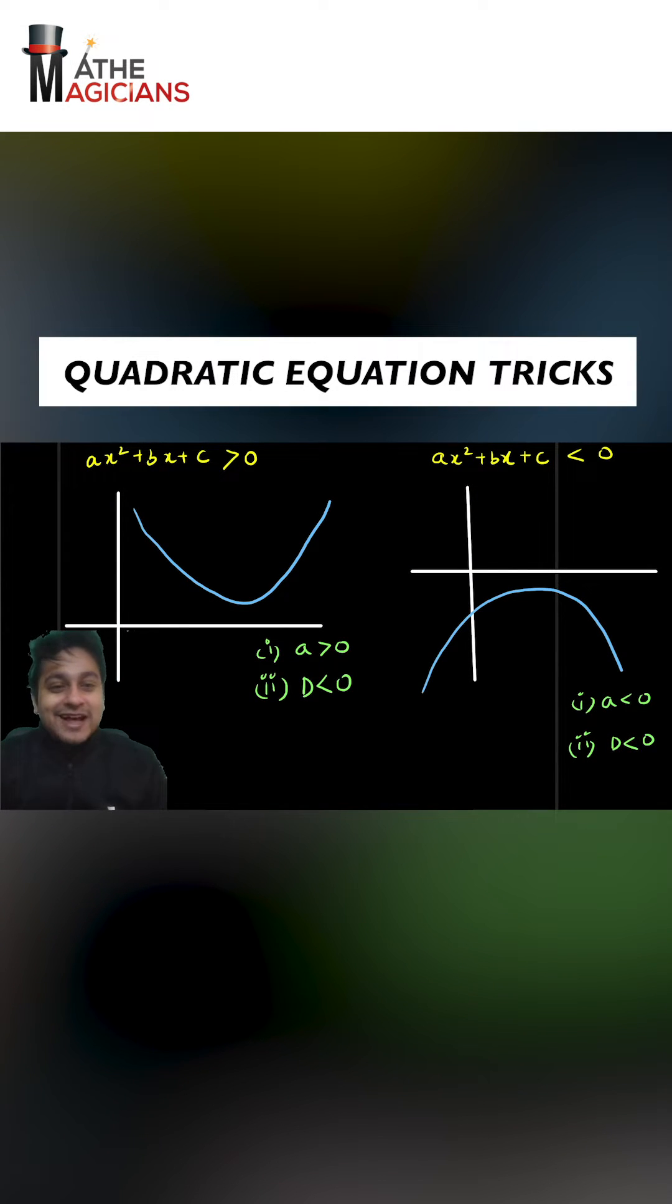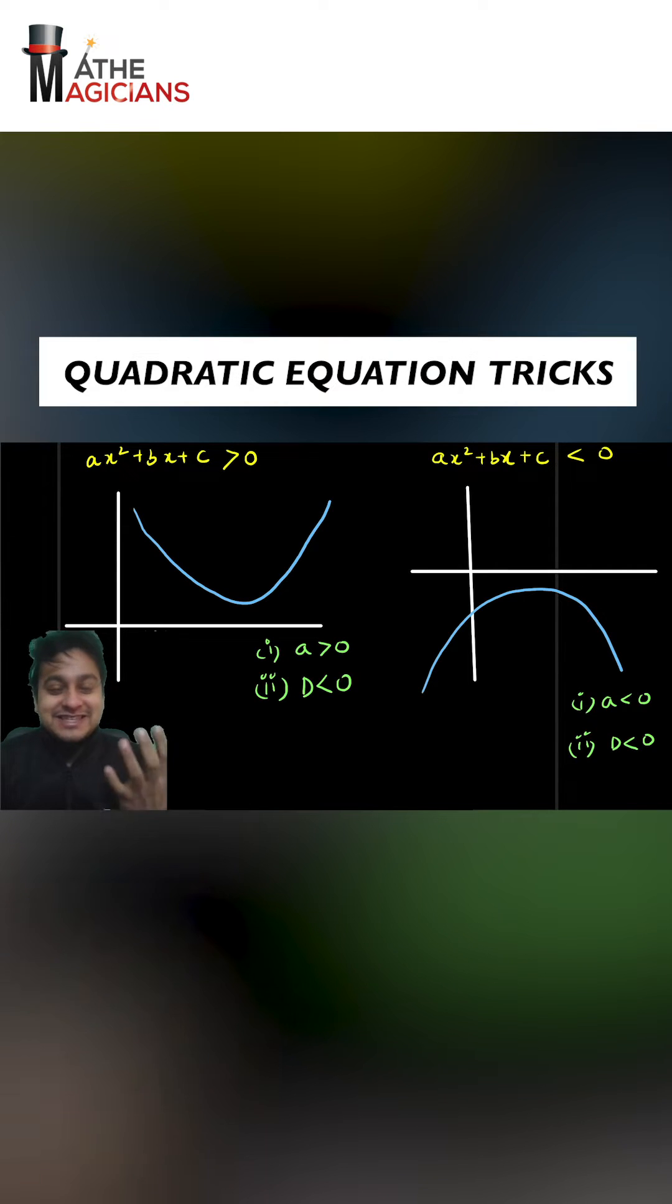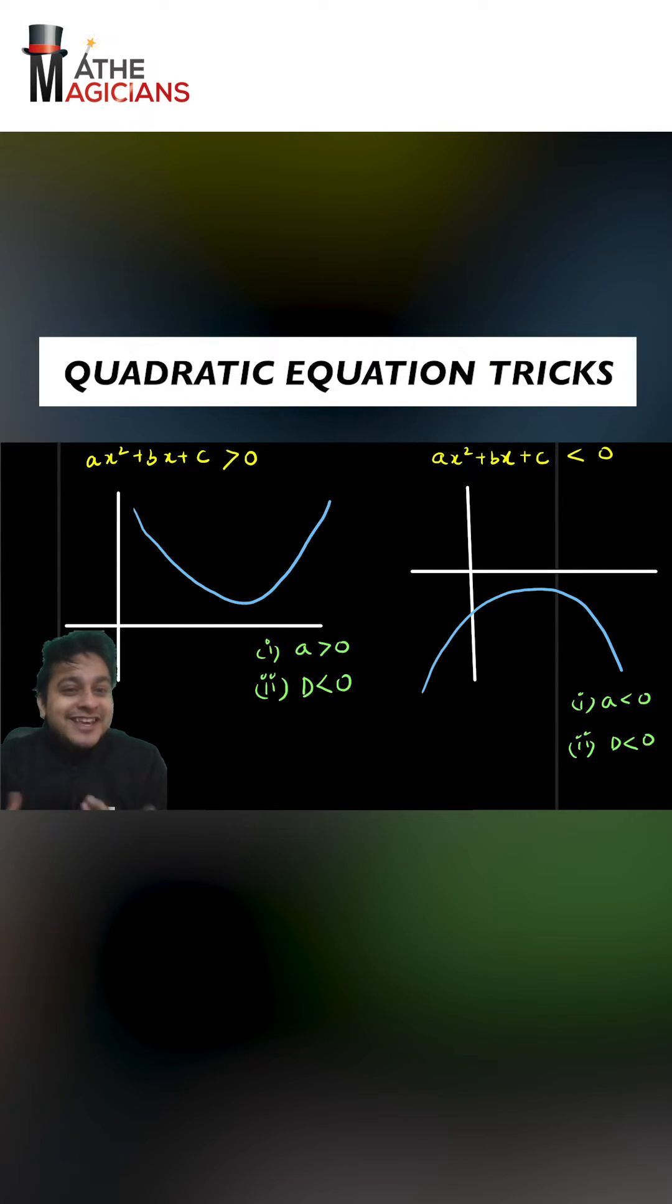Hello everyone, we have two parabolas in front of us. One parabola ax square plus bx plus c is greater than zero. So guys, what can we say about it?